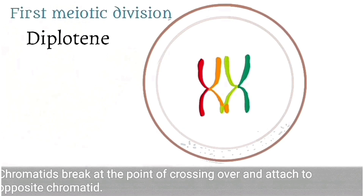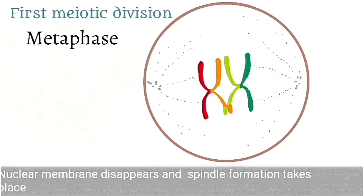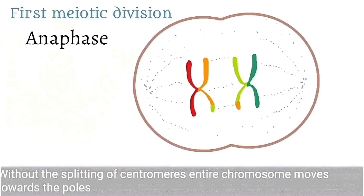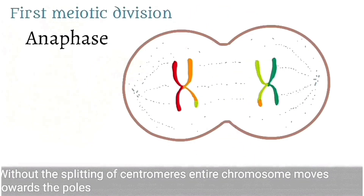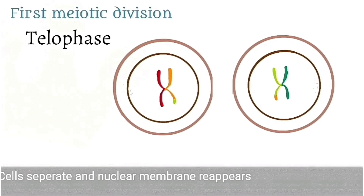Also at the diplotene stage, the nuclear membrane begins to disappear and the centromere splits, moving towards different poles of the cell. Then in the metaphase, there is complete disappearance of the nuclear membrane and spindle formation takes place. This is followed by the anaphase, where the entire chromosome moves towards the poles.